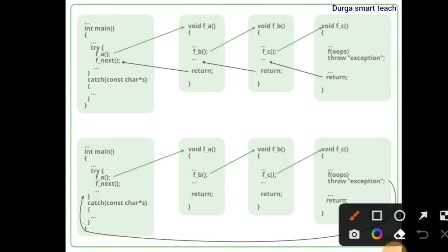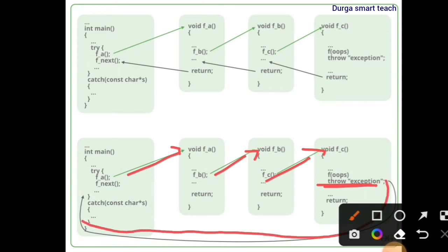So in this situation, fa is calling fb and fc — so throw exception. Throw exception means it will throw the exception and it will be caught in the catch block. I will discuss exception topics later.